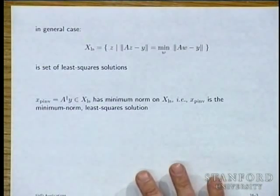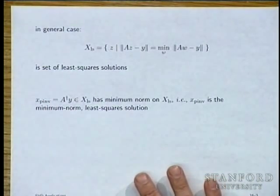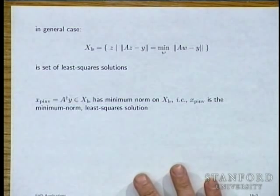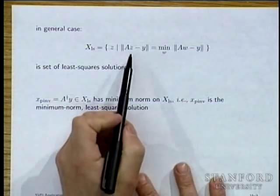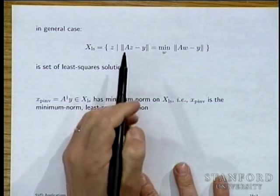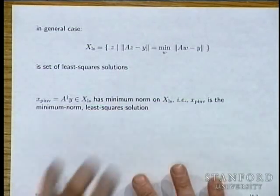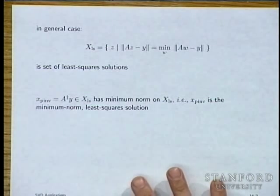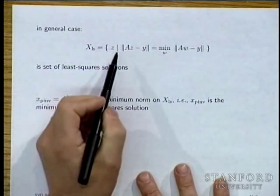In the general case when A is not full rank and you want to do least squares, things get tricky. You would normally form (A^T A)⁻¹, but A^T A is not invertible if A is not full rank.